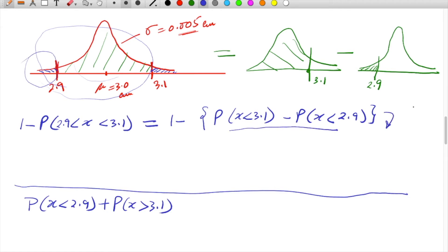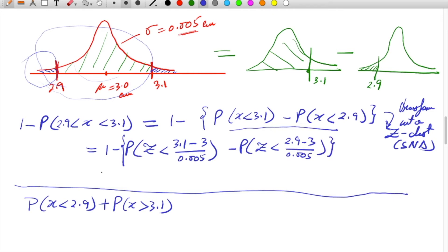If we transform into the z distribution, the standard normal distribution, this equals 1 minus P(Z < (3.1 - 3)/0.005) minus P(Z < (2.9 - 3)/0.005). That comes out as 1 minus P(Z < 20) minus P(Z < -20).